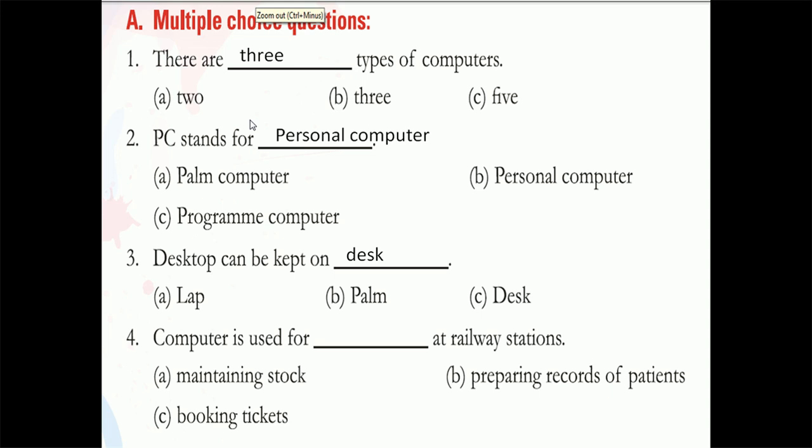Next: computer is used for blank at railway station. Why do we use a computer at a railway station? Not for maintaining stock. Records of patients are maintained in hospitals. The answer is booking tickets — computers are used for booking tickets at the railway station.